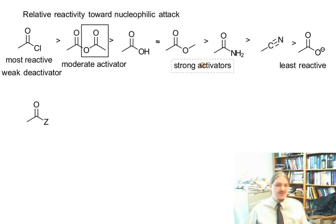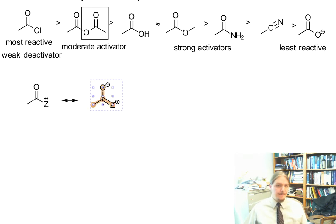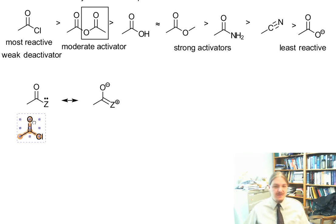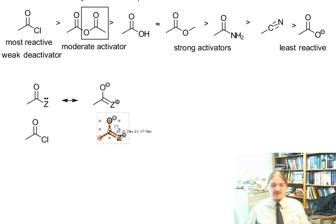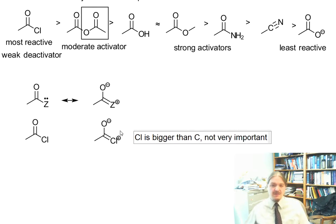We're going to use just the generic Z group. The relative ability of Z to be electron donating through resonance — Z with a positive charge. So when Z is equal to chlorine, we can draw these two resonance contributors. But chlorine is bigger than carbon, and the second resonance structure is not very important. And chlorine is also electronegative.